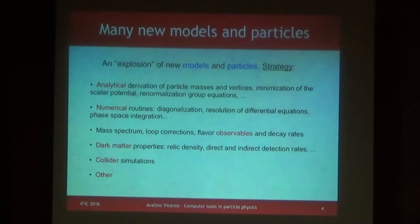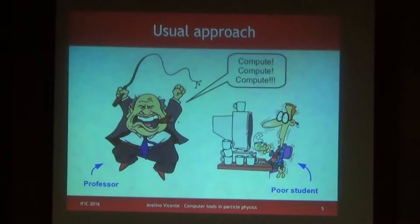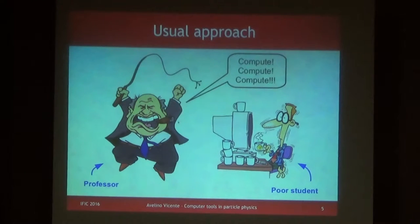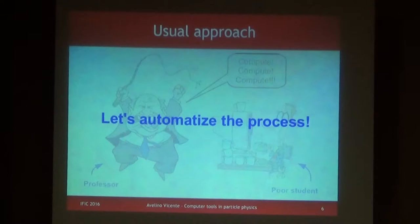This was done traditionally basically like this: you have a professor and a student, the student does everything, the professor says compute, compute, compute, and in the end the work is done. But the point is that many things are done always in the same way — you basically repeat a process. For example, when you calculate mass matrices, you know you have to take some derivatives of the potential, put them properly in a matrix, and that's what you have. So why not automatize this process? This is the whole idea of this course. There are some things that can be done always in the same way, and for that we have computers — we don't have to do it by hand anymore.